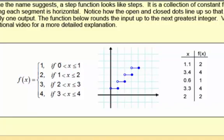So this first one, you have an output of one if x is greater than zero or less than or equal to one, and that's represented here on the graph by this first step. So any input greater than zero but less than or equal to one is going to have an output of one.